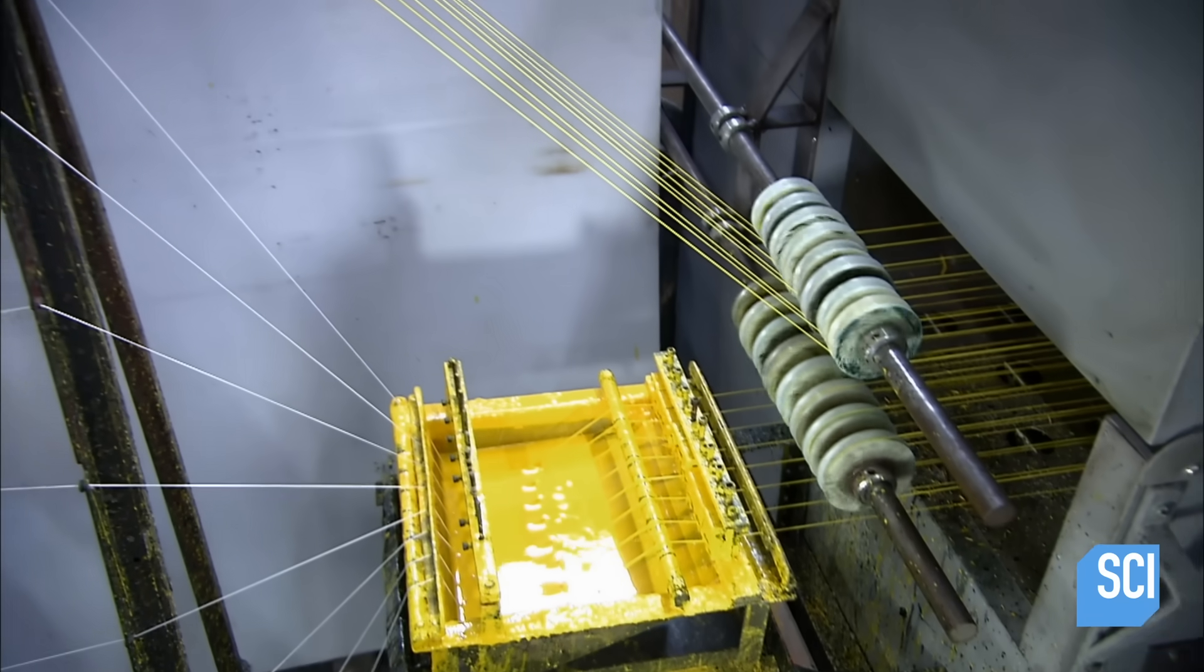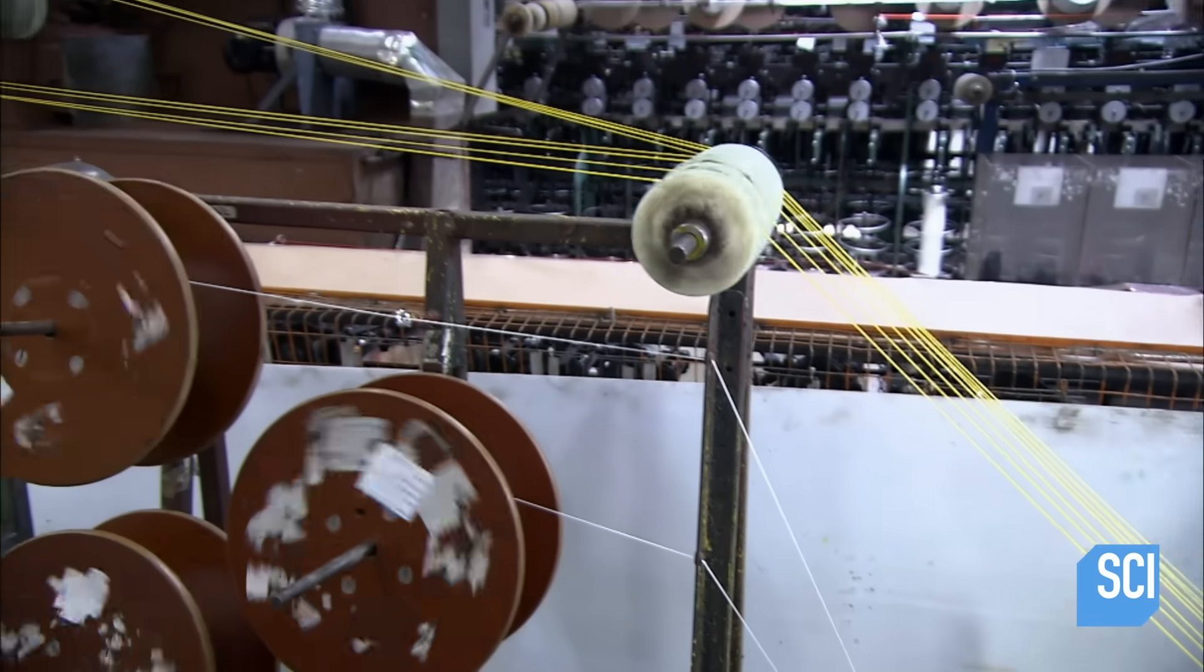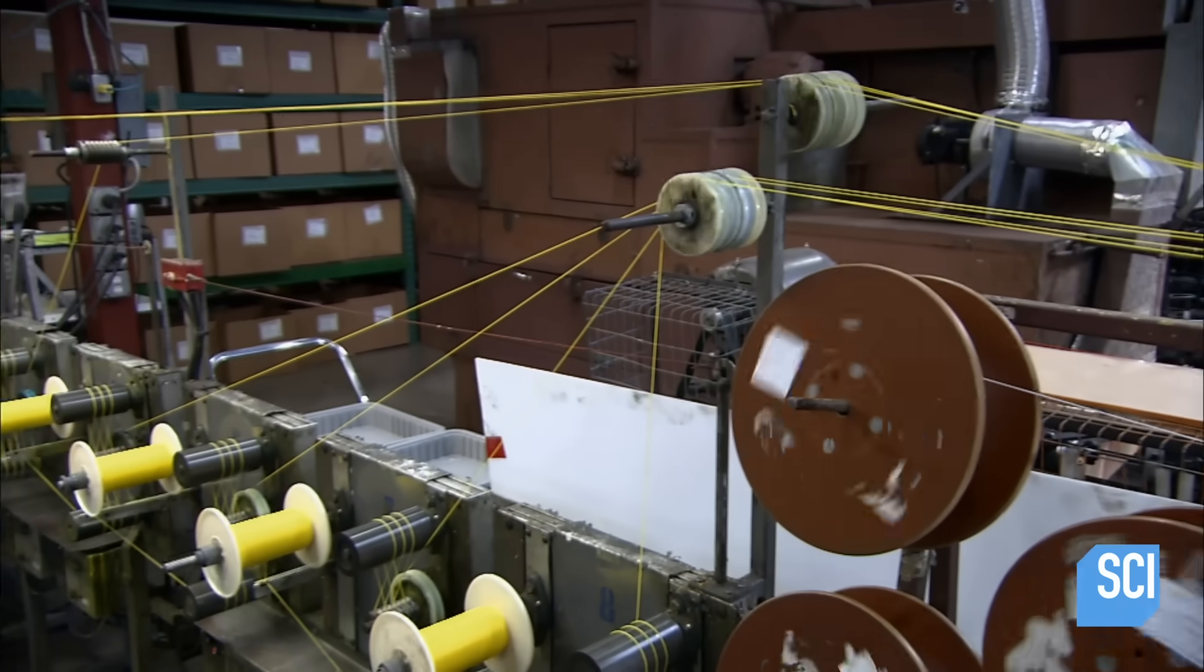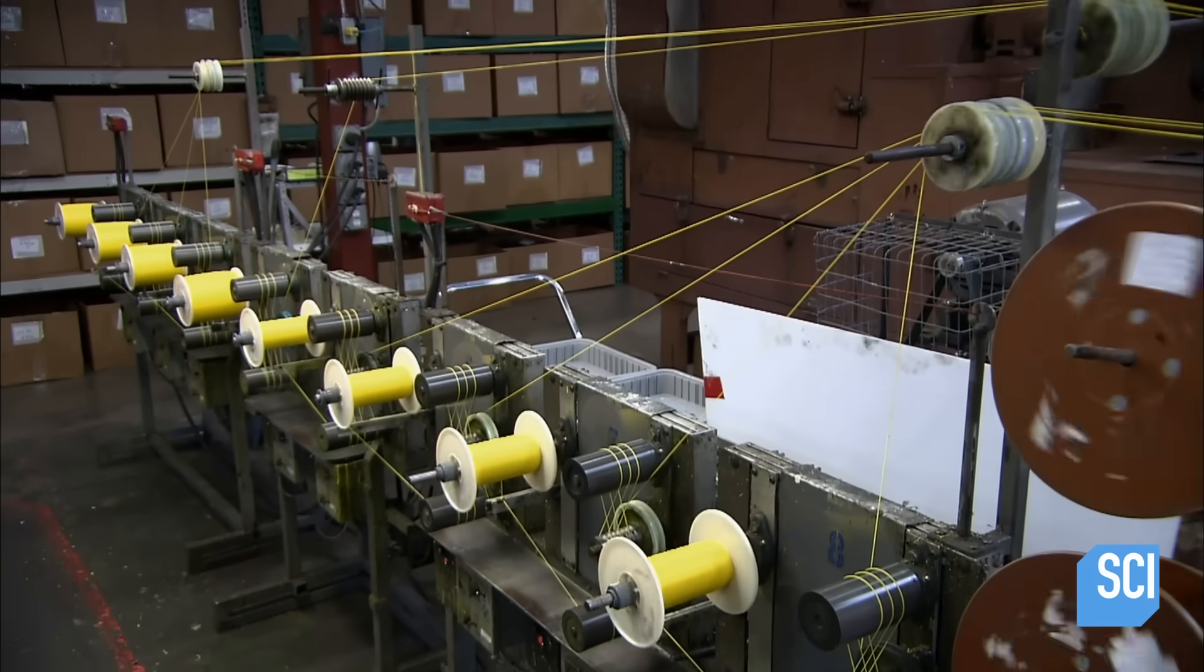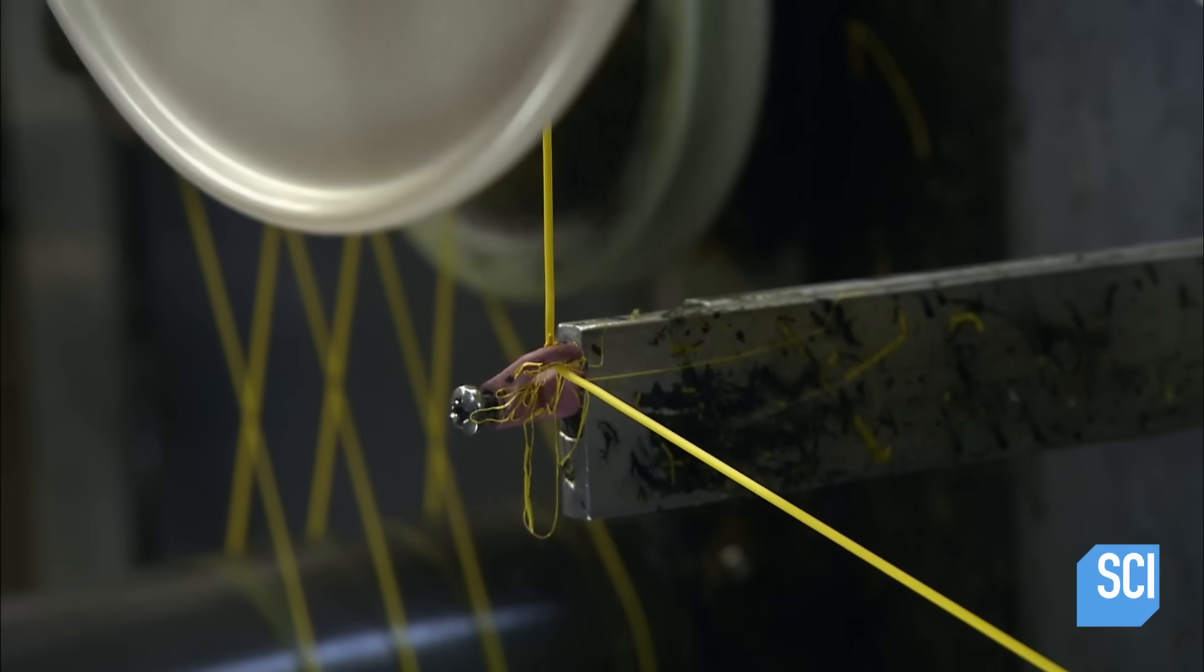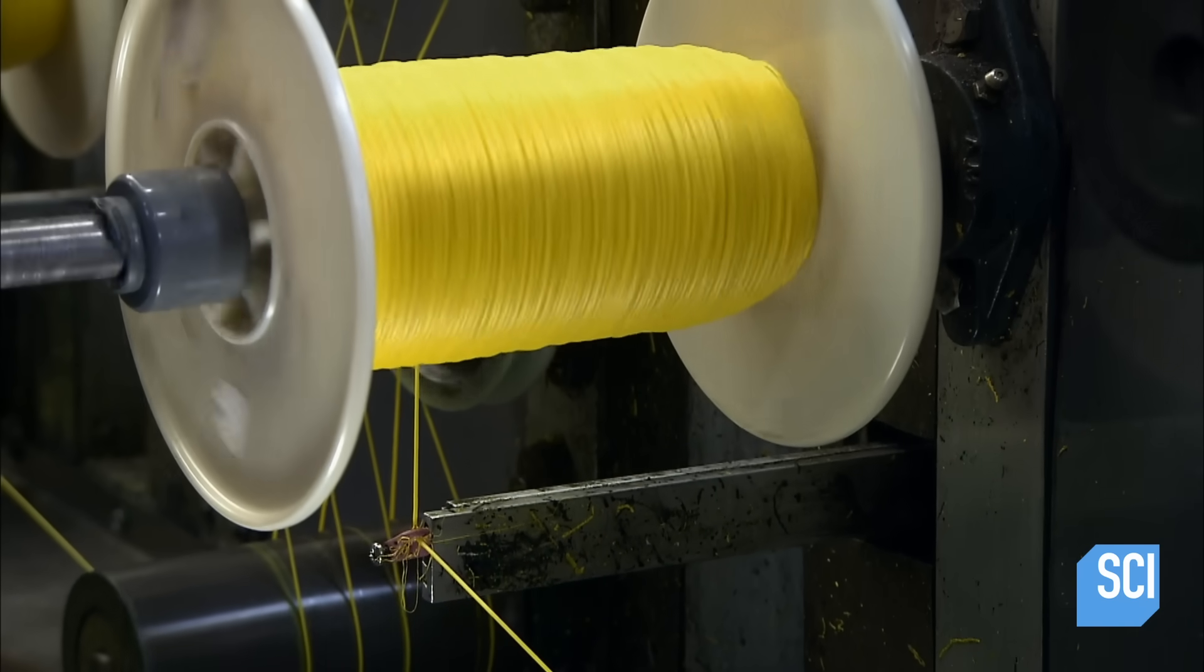Next, the line travels through an oven to cure the resin. It travels over a series of tensioning rollers as it exits. Then, the line goes through an abrasive eyelet which removes external contaminants. Finally, it's rolled up by a spool.